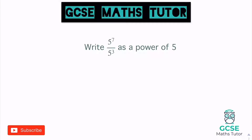Now again, there is a quick trick for this one. If we think about what this means, we've got five to the power of seven, which is quite a lot of fives on the top. So five times five times five — that's four, five, six, seven.